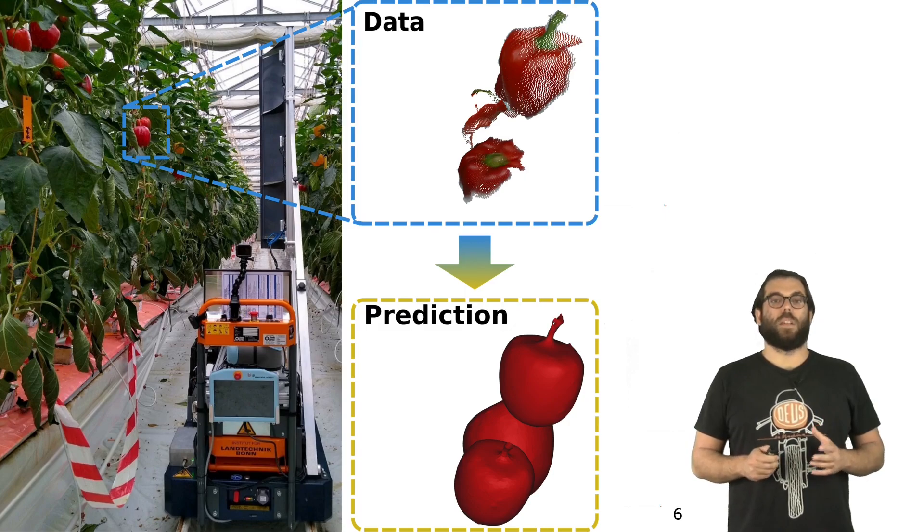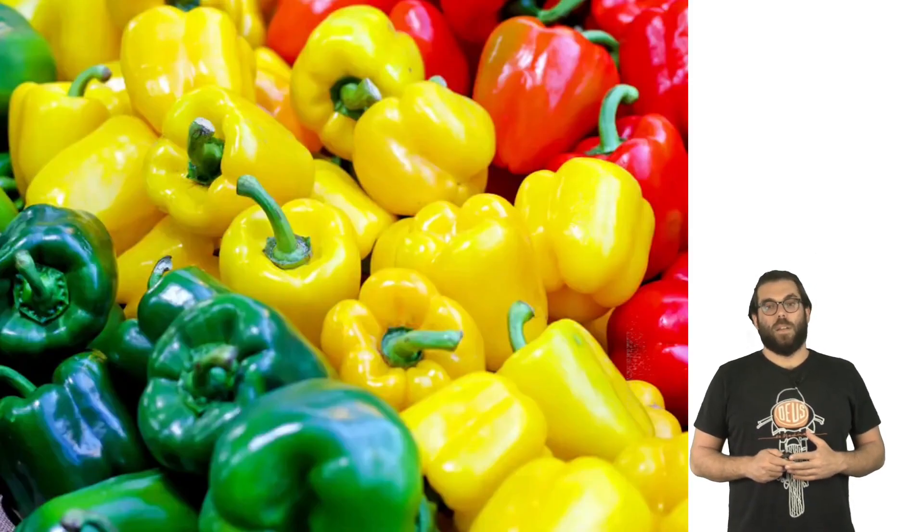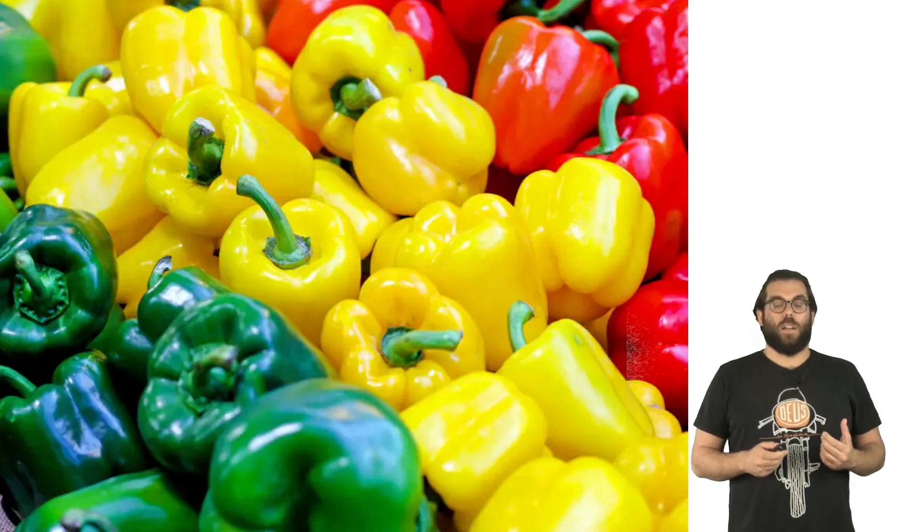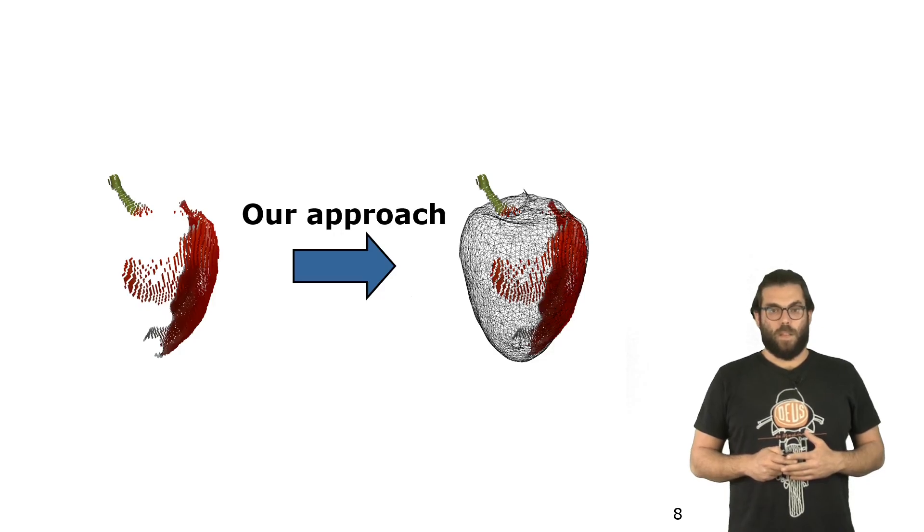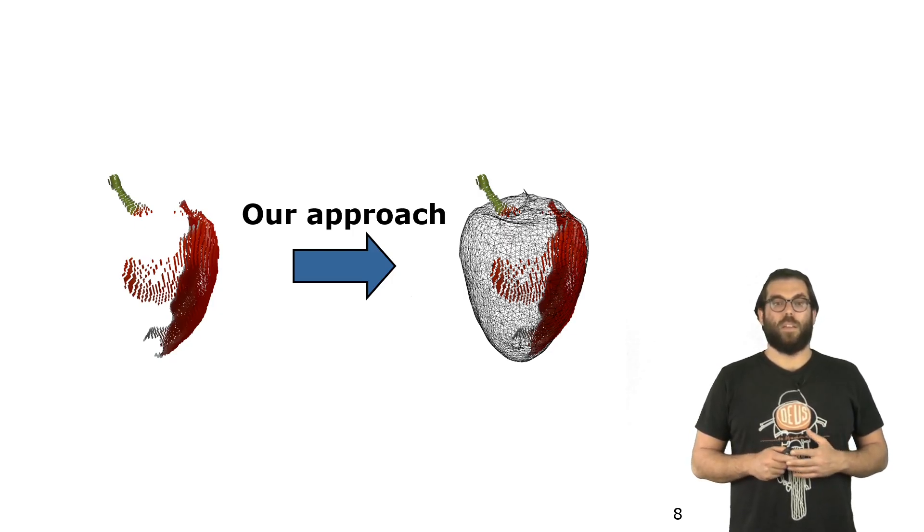This is a task that we as humans can do each day at a grocery store, because we, during our life, have seen quite a few examples of sweet peppers. That means that we know how a typical sweet pepper would look like. This is exactly what we want to do in this paper: turn a partial RGBD frame into a complete 3D model.